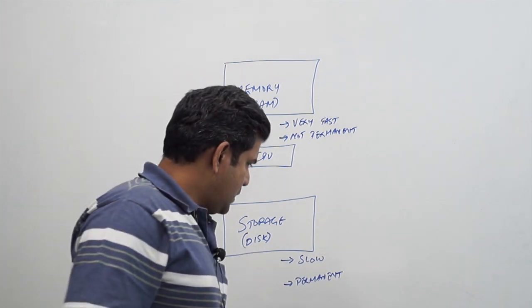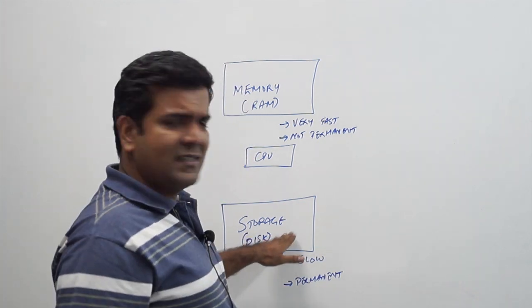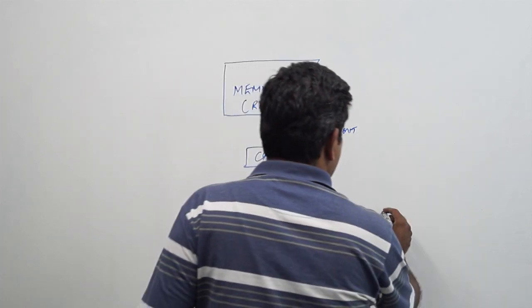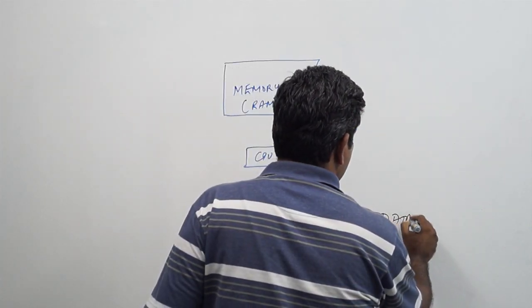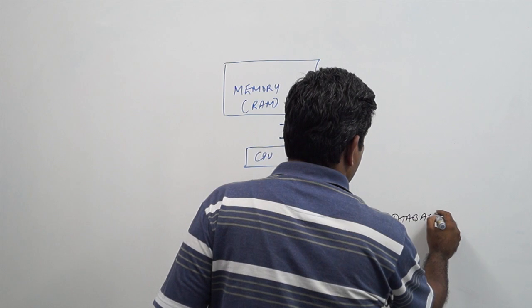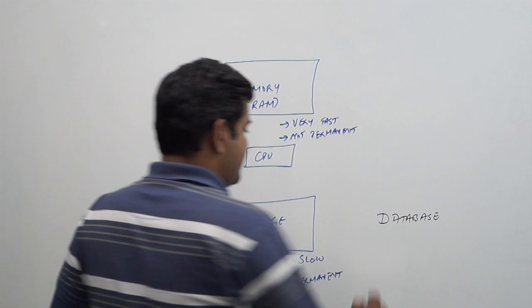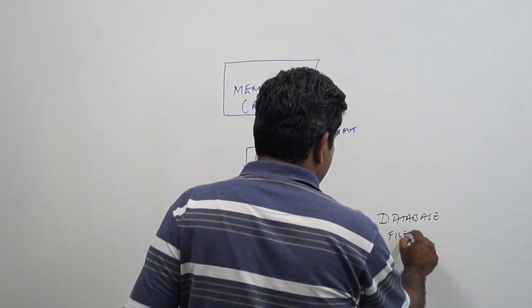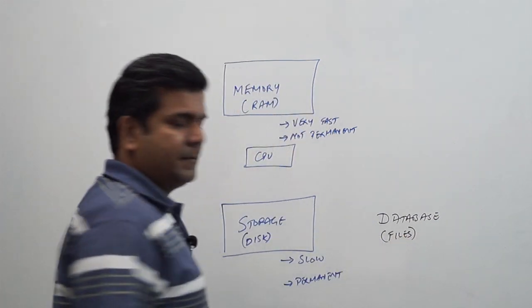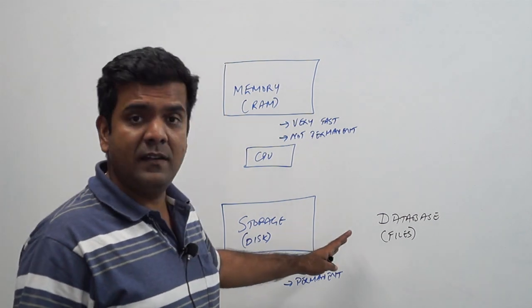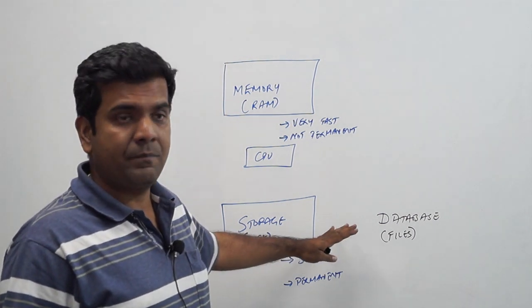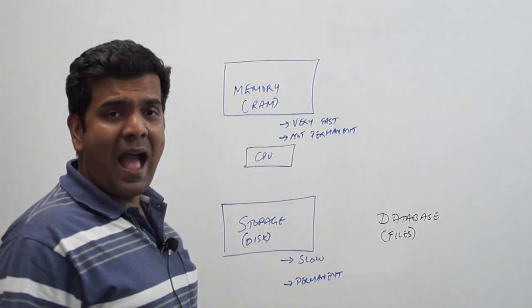The component that sits in the storage is called a database. The database sits on the storage and is made up of files. There are different types of files which we will come to later.